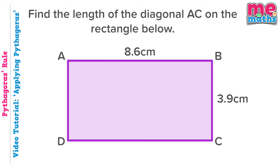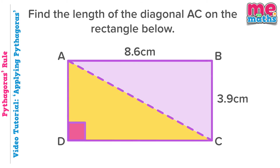On to our next problem. Here we're looking at a rectangle, so it certainly doesn't appear just from looking at it to be anything to do with Pythagoras' rule. We've been asked to find the length of the diagonal AC, which means the line from point A to point C. As soon as we draw that diagonal, we've created two right angled triangles, just one of which we'll focus on.